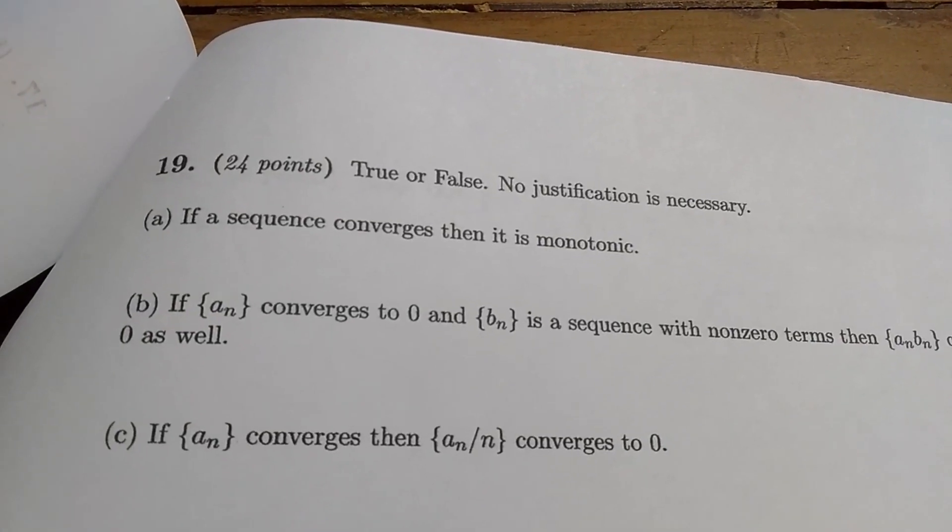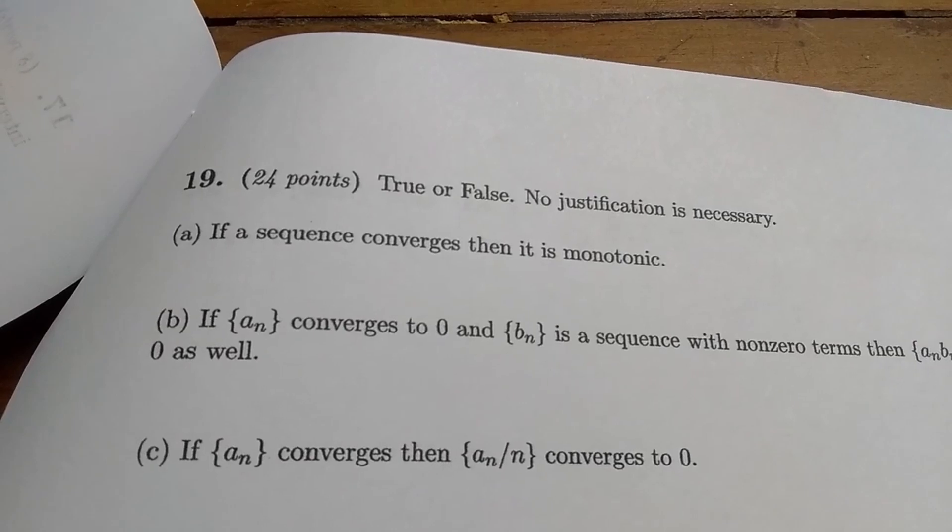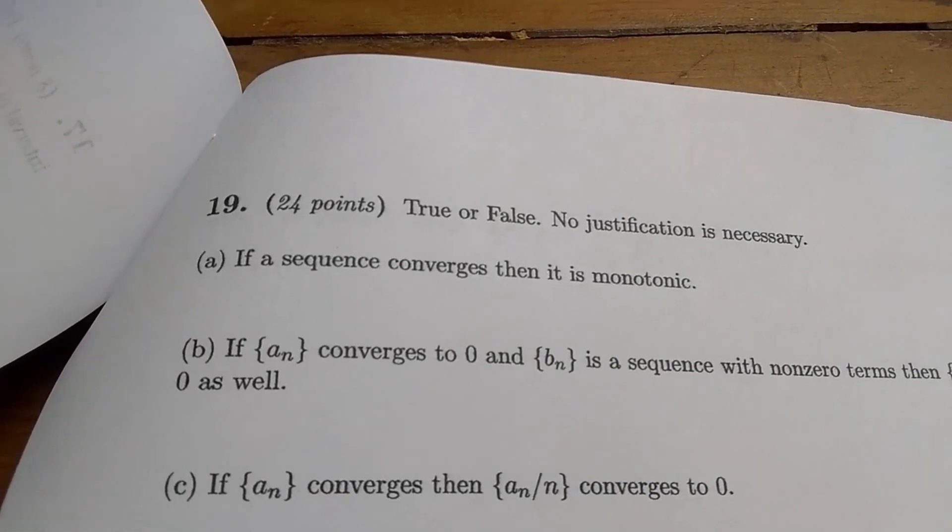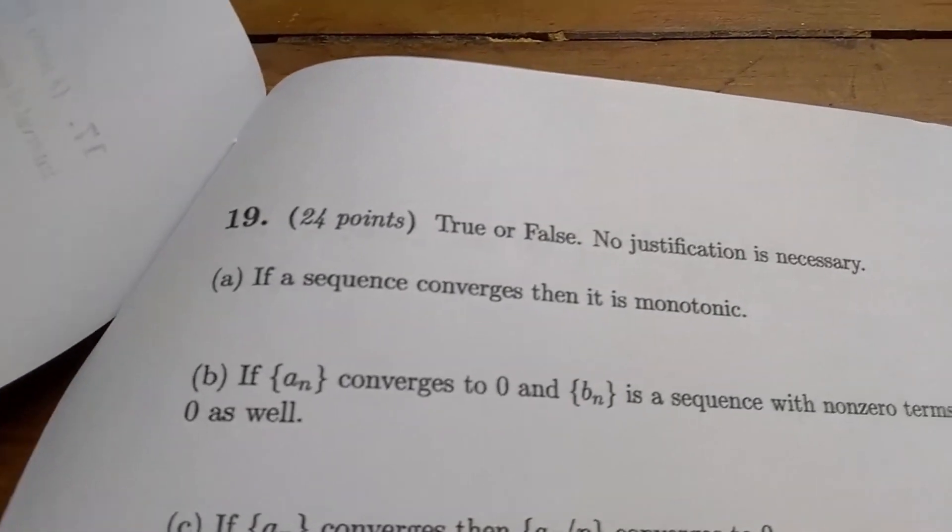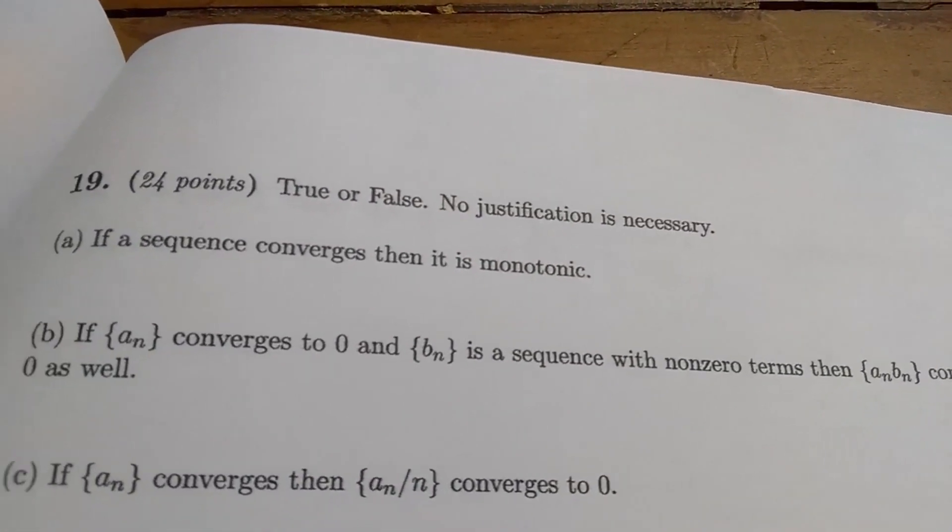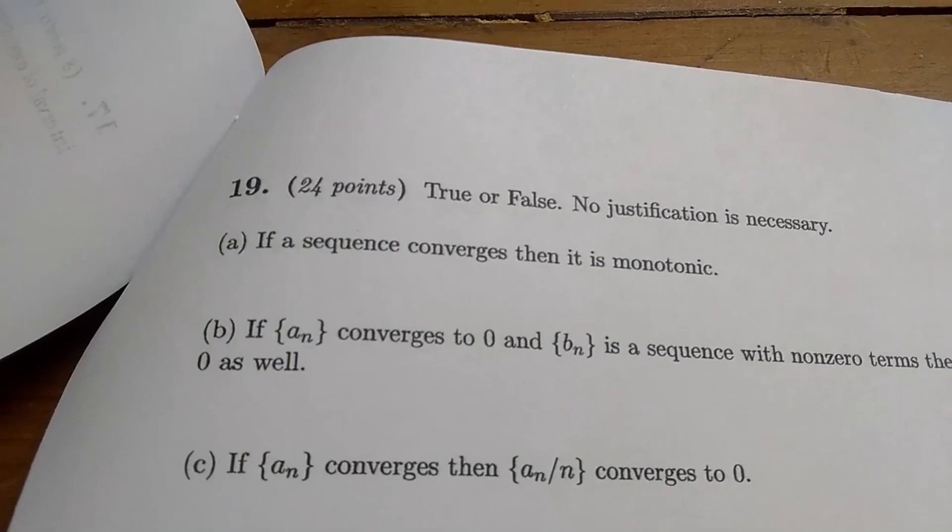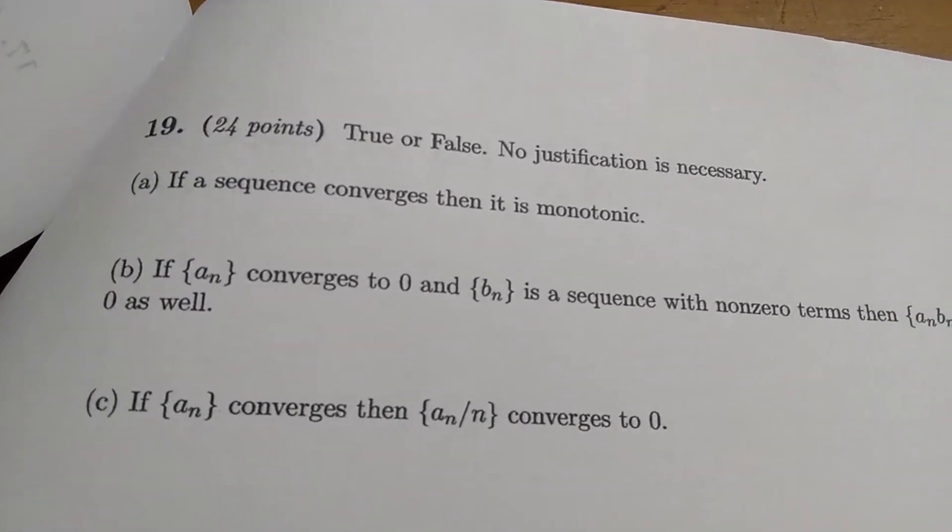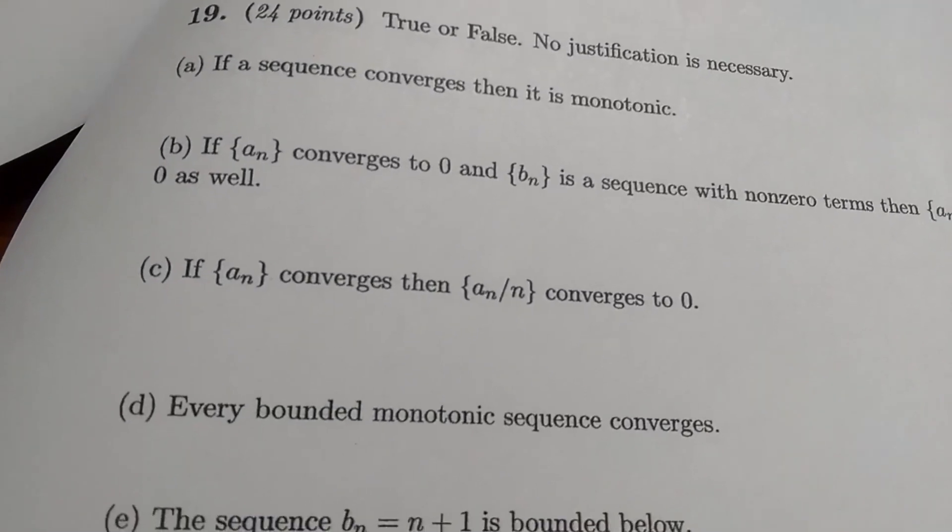Now, this is where things start to get a little bit out of hand. This is page number seven. So typically, my tests aren't this long. So we have true or false questions, 24 points. No justification is necessary. So if a sequence converges, then it is monotonic. True or false? That is false. And you can see these true or false questions are pretty tough.